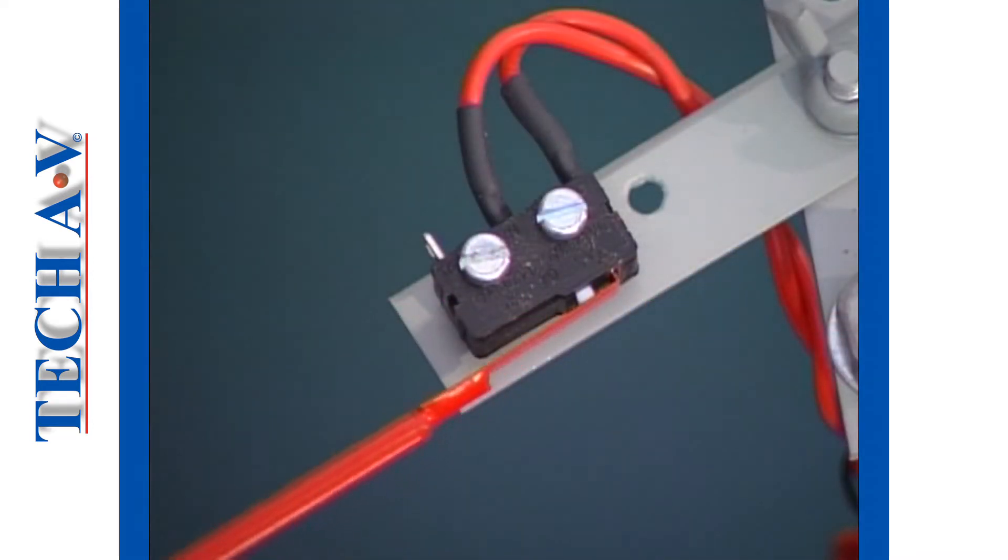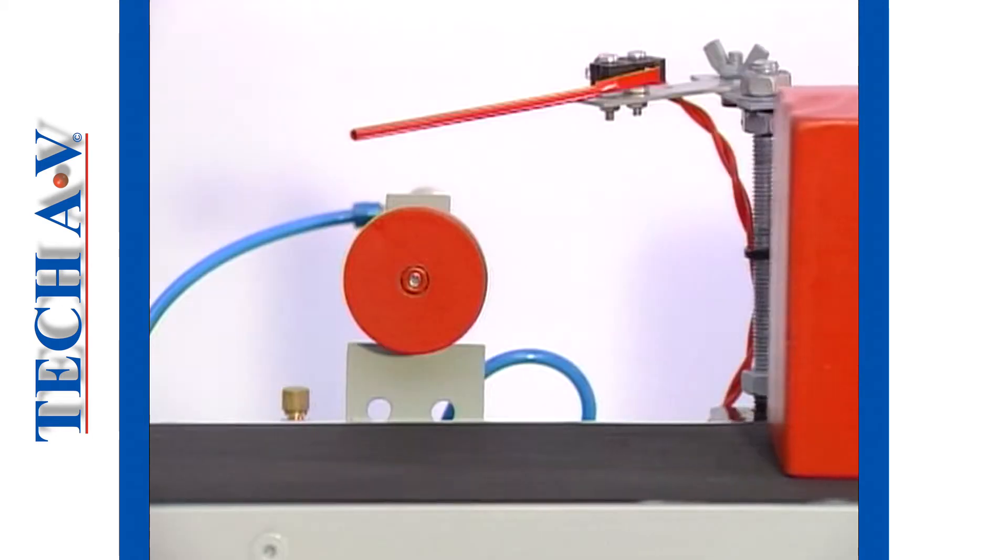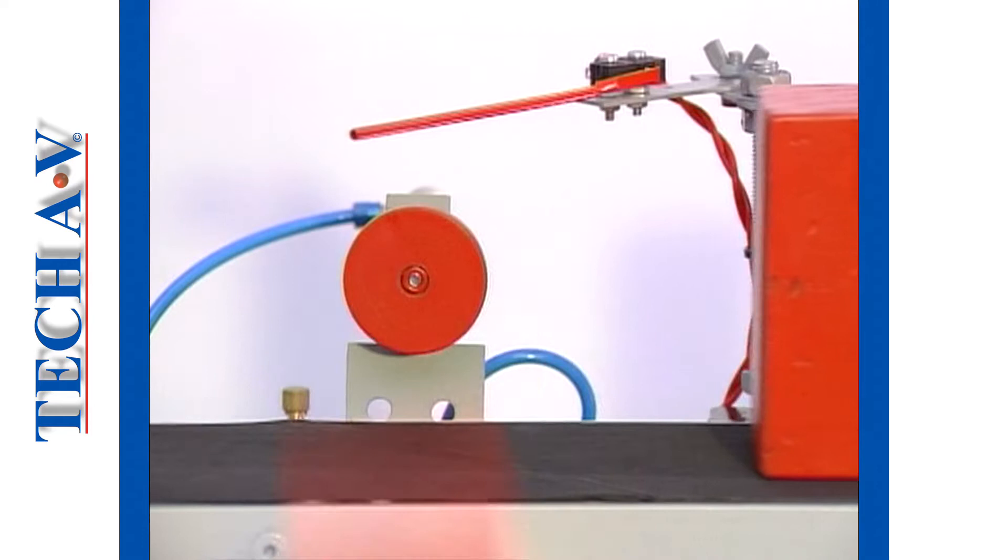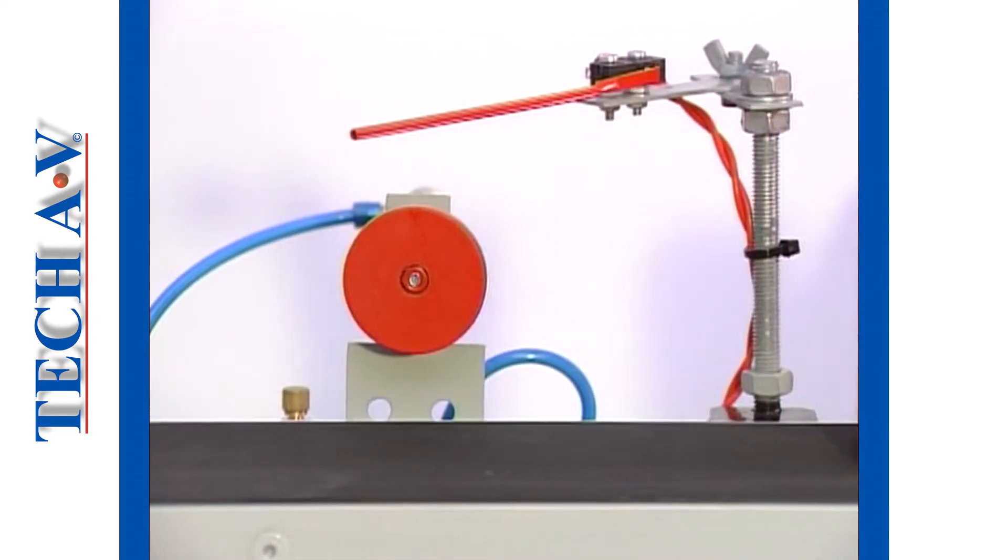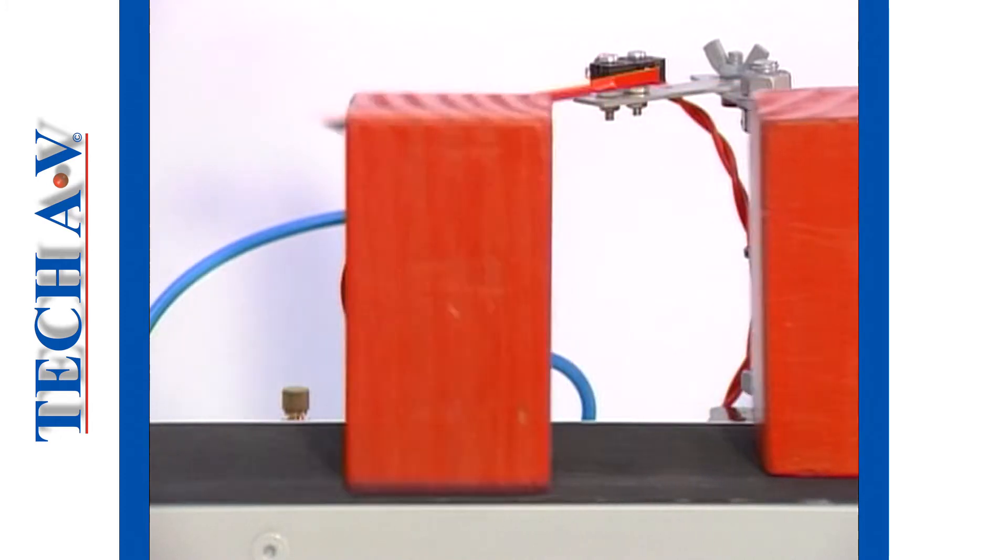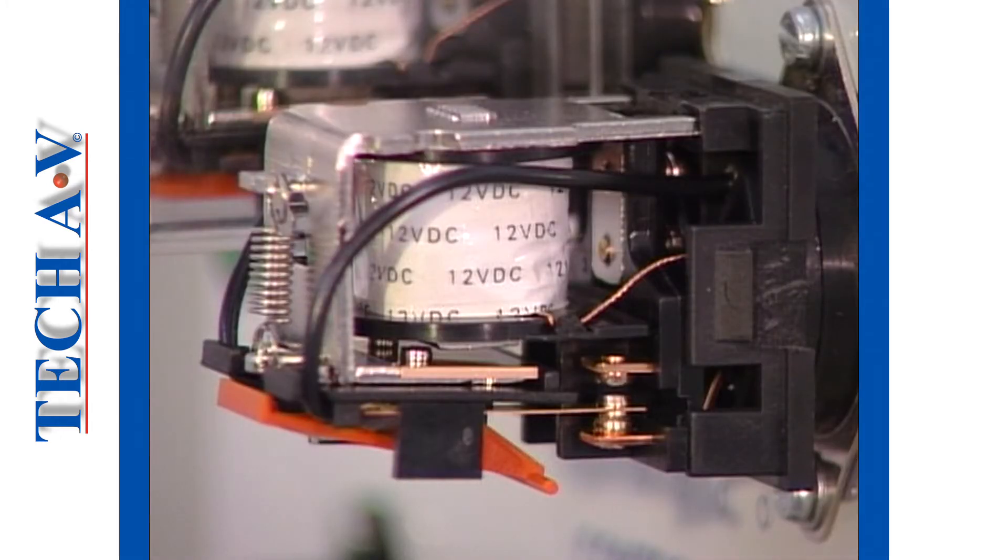Then, using a simple two-state switch as a sensing device, we were able to send a simple on-off message to the logic section of our control system to make a decision. Next, we introduced the electromechanical relay as the logic or reasoning device in our controller.